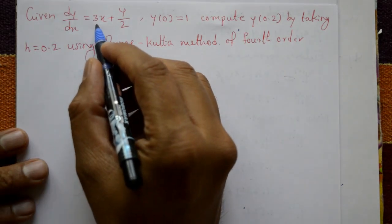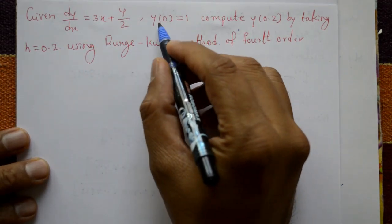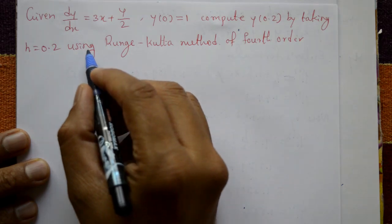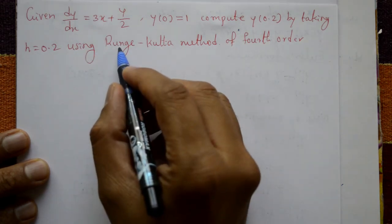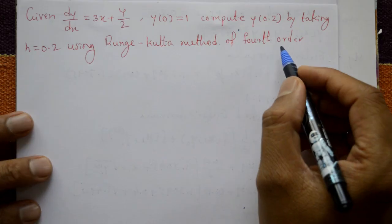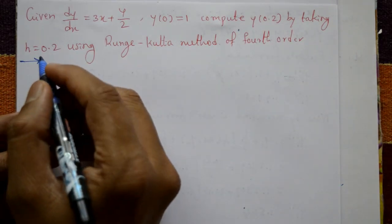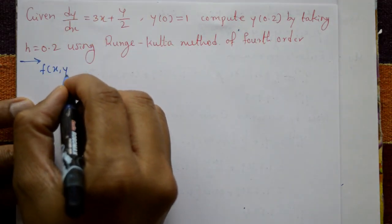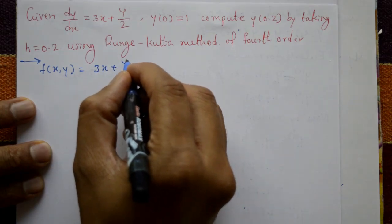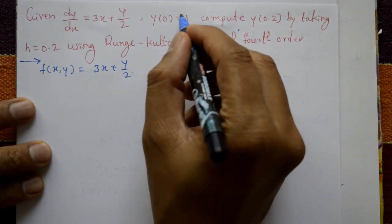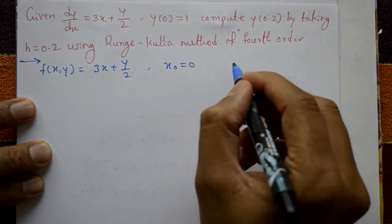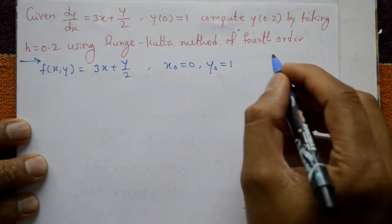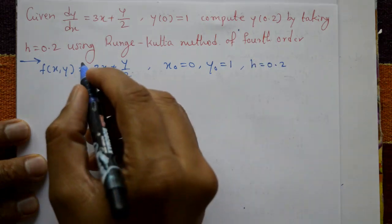Given dy/dx = (3x + y)/2, with y(0) = 1, compute y(0.2) by taking h = 0.2 using the Runge-Kutta method of fourth order. The function f(x, y) = (3x + y)/2, and the initial values are x naught = 0 and y naught = 1, with h = 0.2.